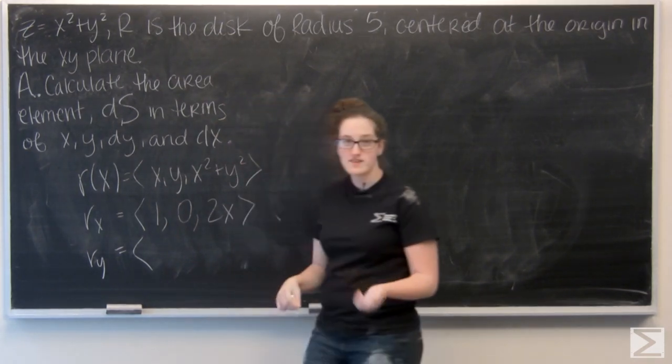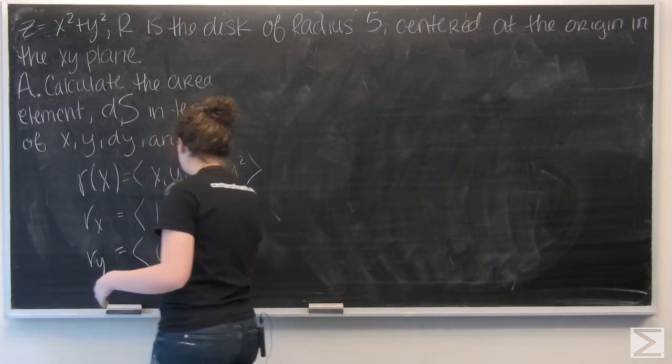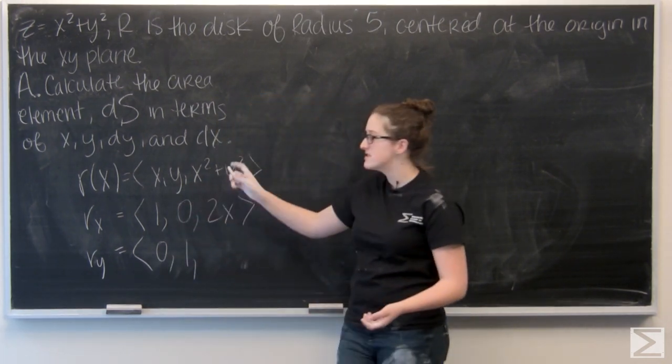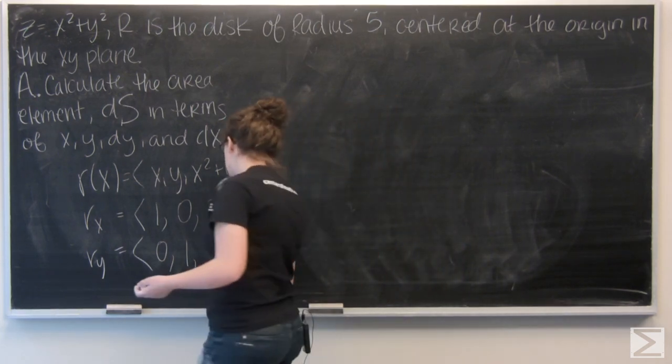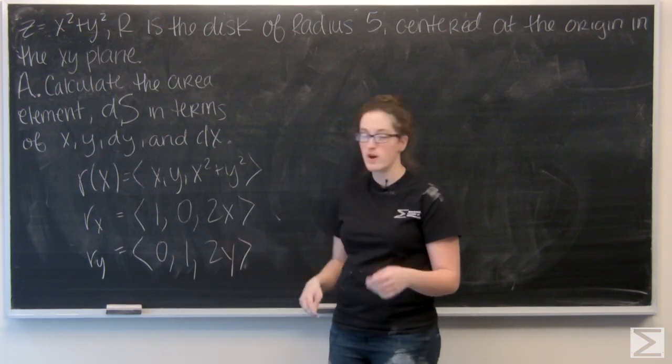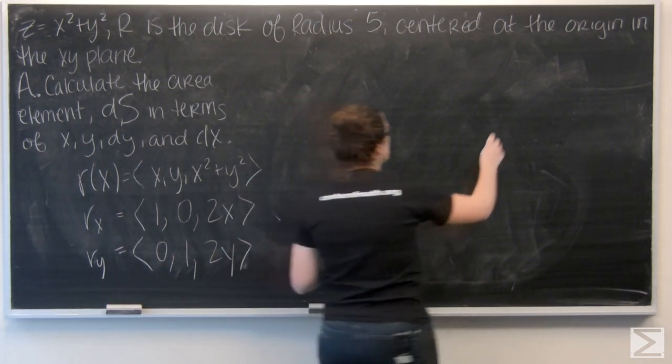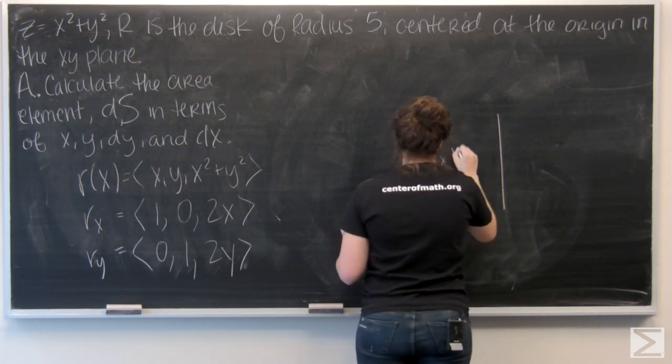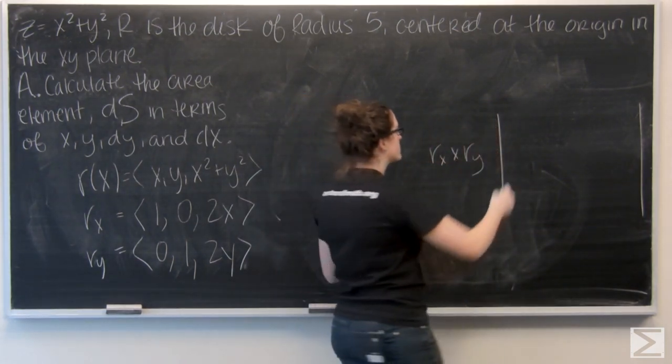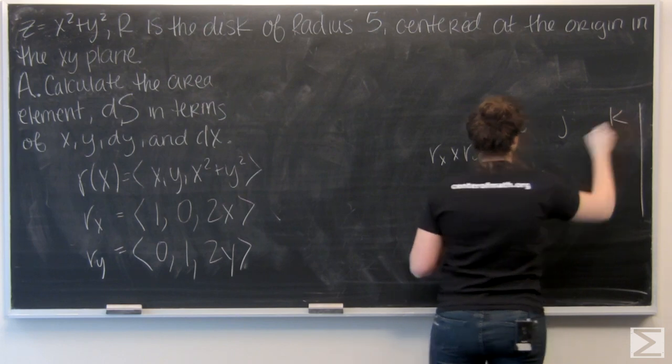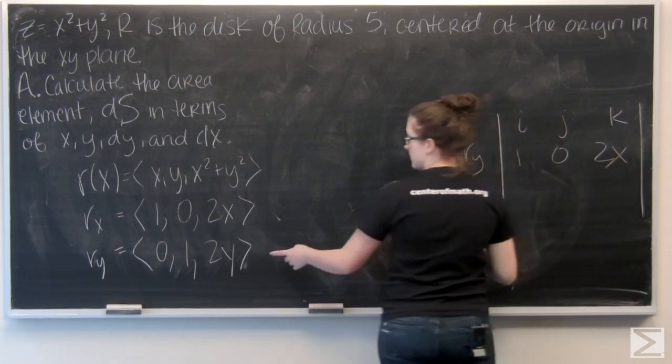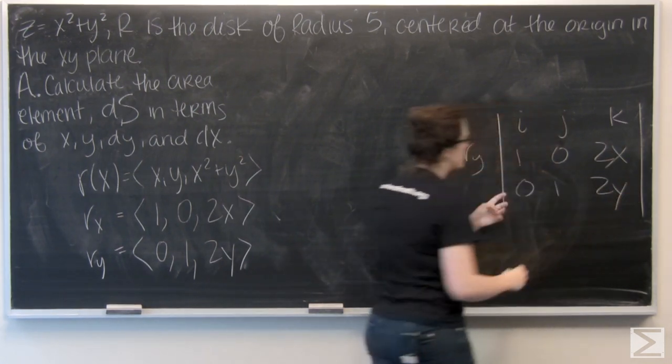So now I want to find the cross product of rx and ry. I'm going to do it using a matrix. So the top row is i, j, k. The second row is rx, and the third row is ry.